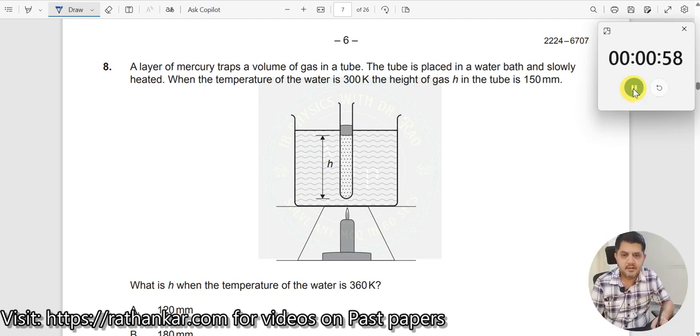Question number 8. A layer of mercury traps a volume of gas in a tube. The tube is placed in a water bath. What does the water bath do? You are heating it here. Water will, temperatures of water will increase.